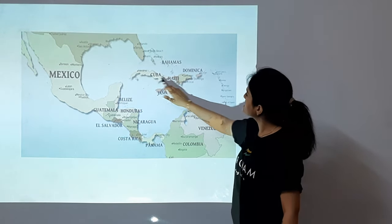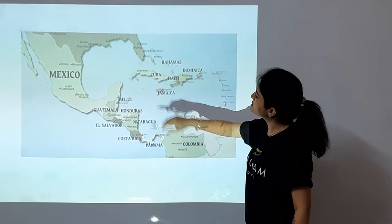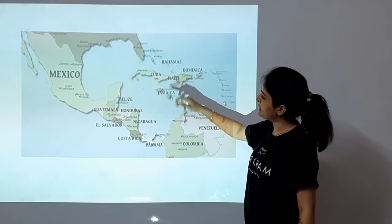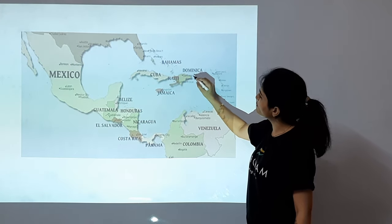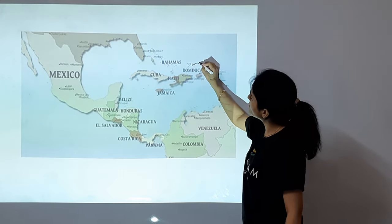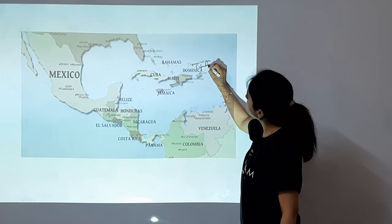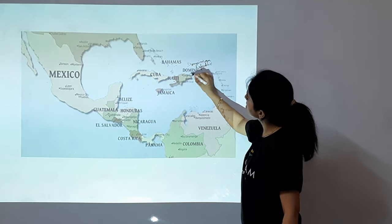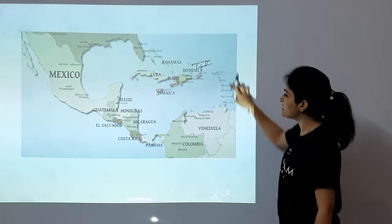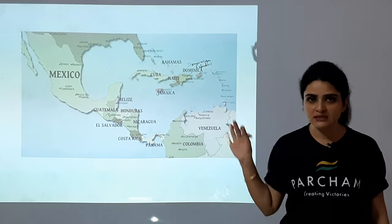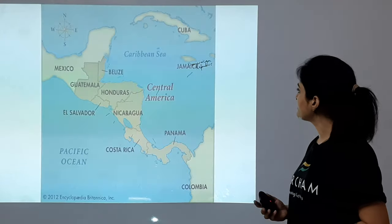You will see a lot of islands in the Caribbean Sea. Like Bahamas, Cuba, Haiti. This is not Dominica — this is Dominican Republic. Then Jamaica. And here the Lesser Antilles. On this slide you are not able to see them clearly, so we have to move to the next slide.